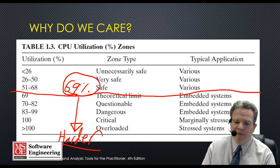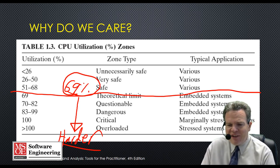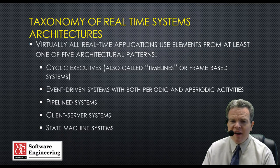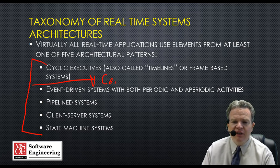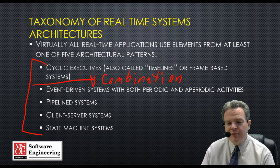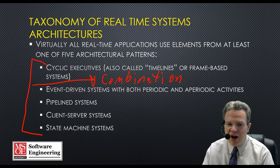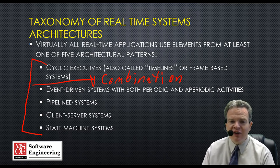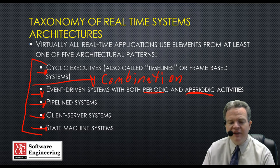Now let's talk about architecture, because architecture governs how some of these things behave, what type of tasks we have, and how things are going to be impacted by trying to execute them. In a real-time system, we use essentially one of five different architectural patterns, or possibly some combination. These architectures tend to be: a cyclic executive, an event-driven system with both periodic and aperiodic activities, a pipeline system, a client-server system, and a state-based or state-machine system.